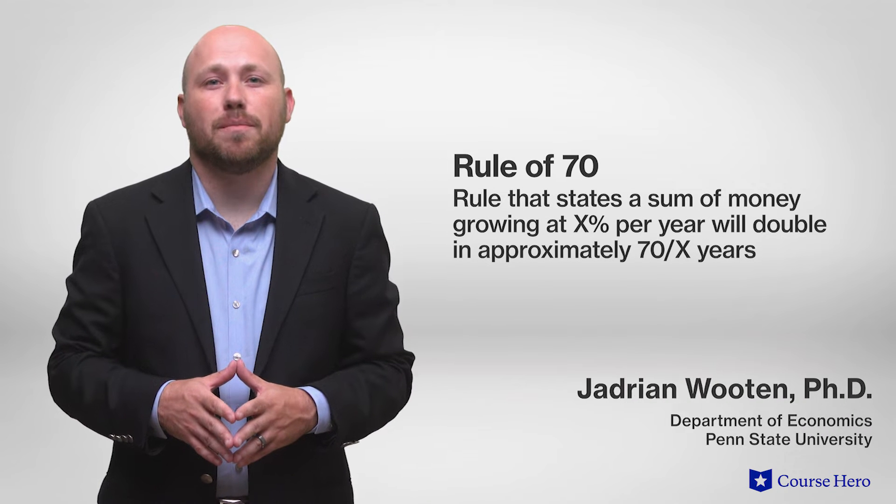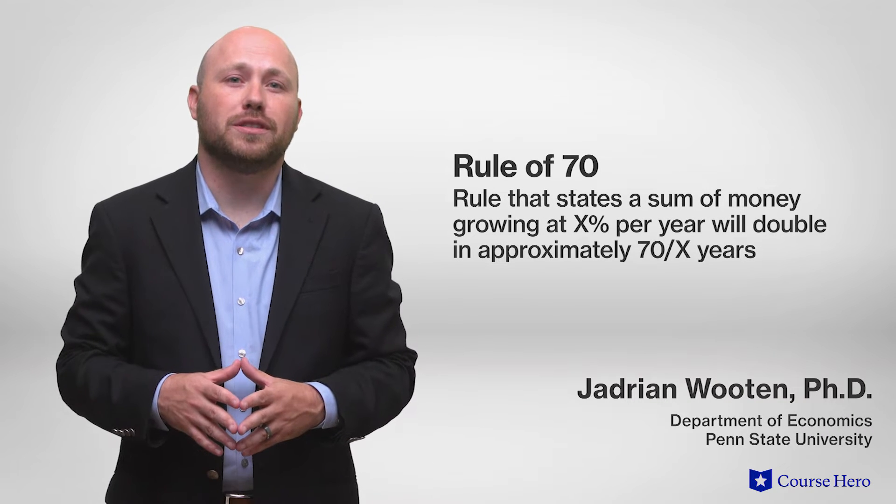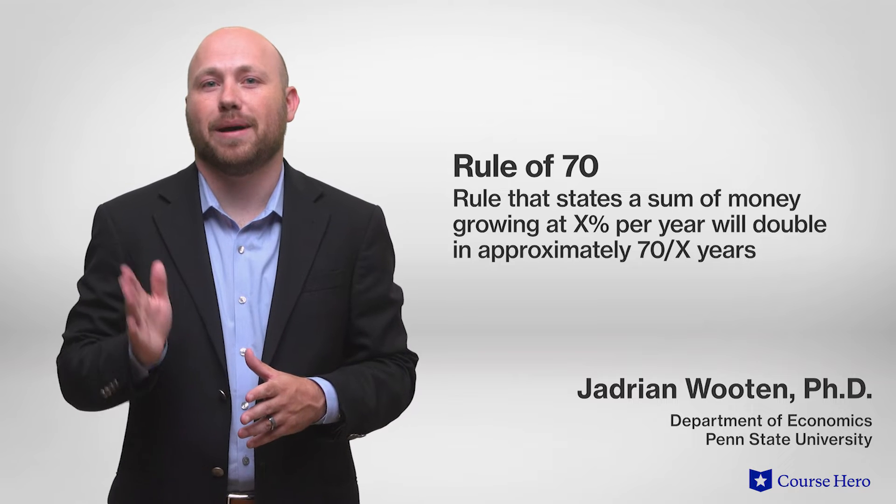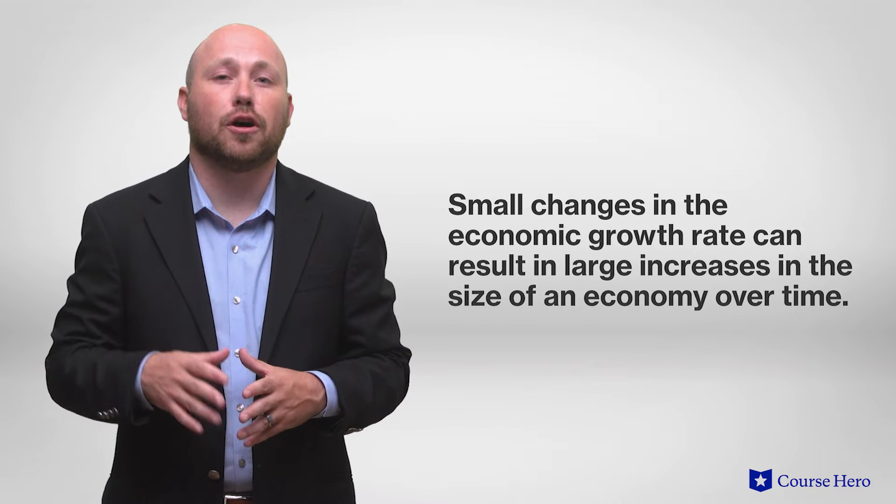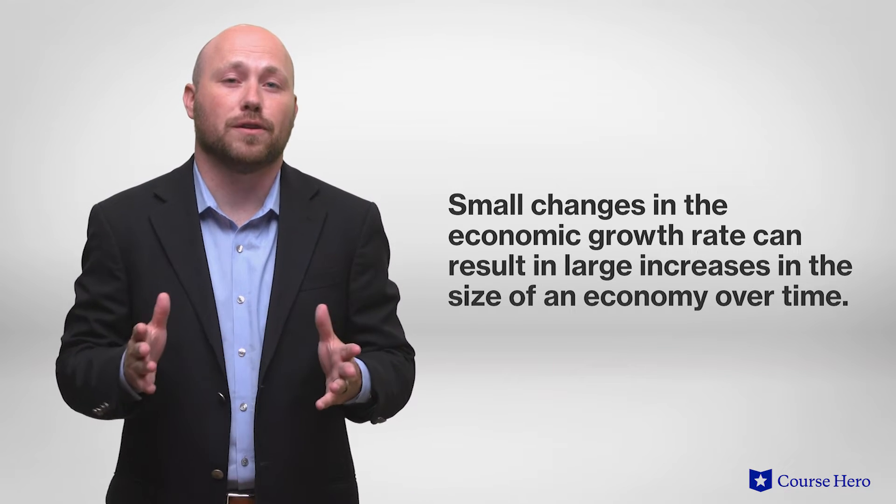The rule of 70 states the sum of money growing at a particular growth rate will double in approximately 70 divided by X years. What this means for economies is that small changes in the economic growth rate can result in large increases in the size of an economy over time.